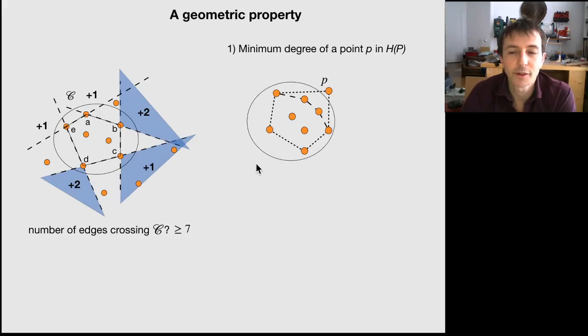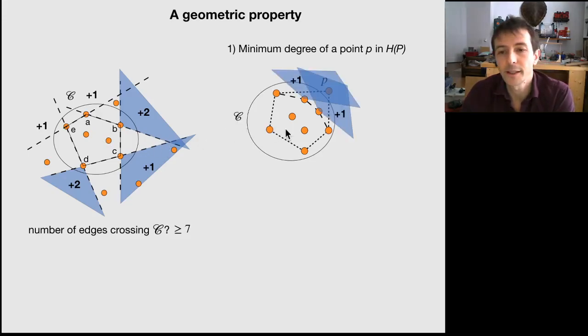The first one is about the minimum degree of a point of the convex hull, P. If you consider this situation and you take this boundary C, well, you apply the reasoning and you get that P has a degree of a minimum 4.